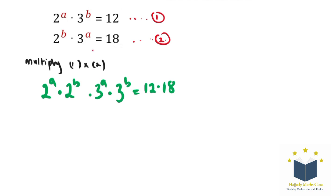And don't forget from the rule of indices that if you have A to the power of M multiplied by A to the power of N, this is the same thing as saying A to the power of M plus N. So the same thing will be used to proceed with this question.